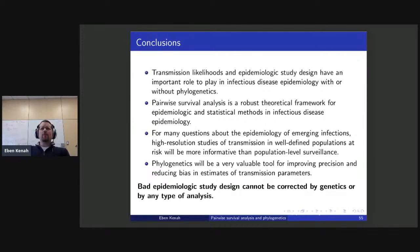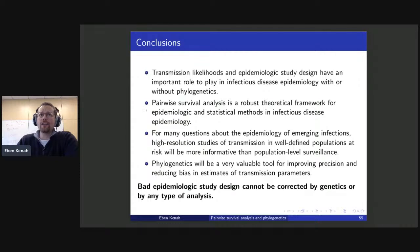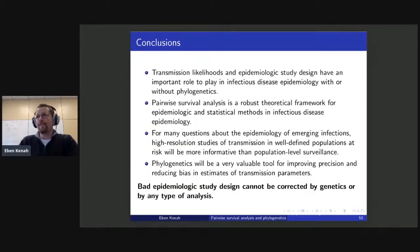Phylogenetics will be a very valuable tool for improving precision and reducing bias in estimates of transmission parameters. But bad epidemiologic study design cannot be corrected by genetics or by any type of analysis — it's garbage in, garbage out, and that includes when we have genetic sequence data from pathogens. We really need to get better at collecting contact tracing data, household data, and data from hospitals and other transmission settings — not just line lists.